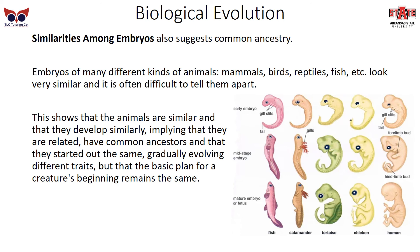Another piece of evidence is similarities among embryos, which suggests common ancestry. Embryos are the early phase of growing a living animal. If you look at mammals, birds, reptiles, fish, and others, they look very similar — it's difficult to tell them apart. For example, a fish, salamander, tortoise, chicken, and human all look very similar in their early embryos. In the mid-stage, some start to look different, and by the mature embryo or fetal stage, differences become more apparent, but they still have much in common. Since these animals develop similarly, this implies they are related, have common ancestors, and that the basic developmental plan remains the same while traits gradually evolved differently.